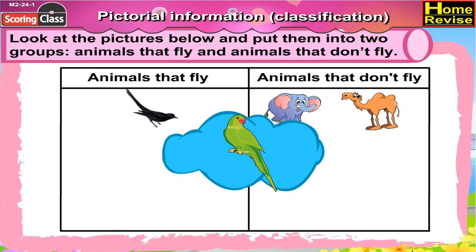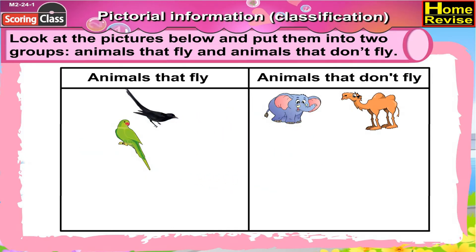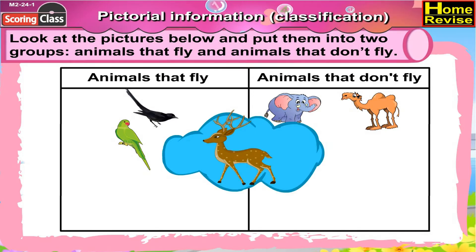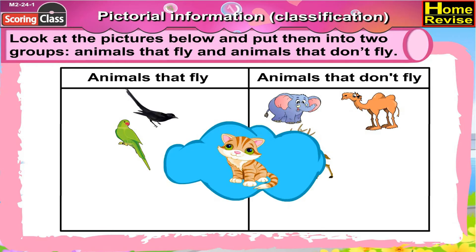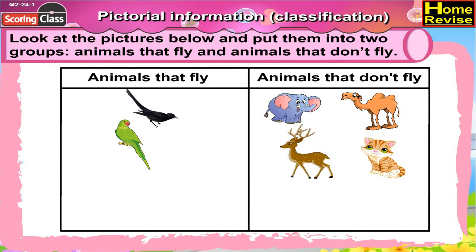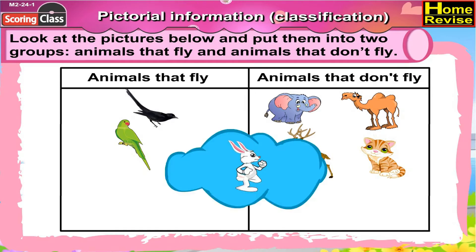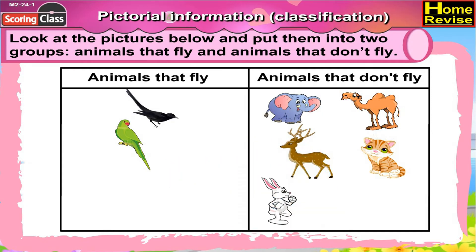Can a parrot fly? Of course it can, so write parrot below animals that fly. Deer — can deer fly? Not at all, so write it under animals that don't fly. Cat — does a cat ever fly? No, so it goes under animals that don't fly. Rabbit — they are cute, but can they fly? No, so they go under animals that don't fly.